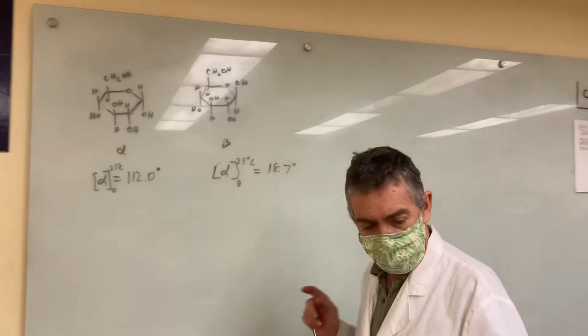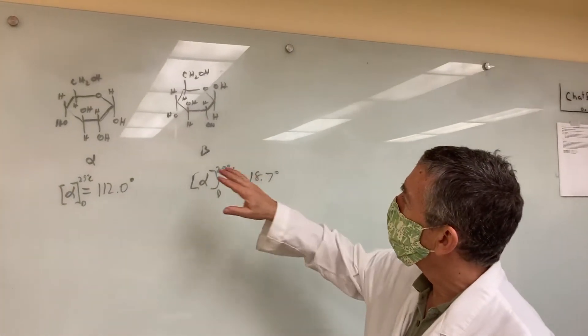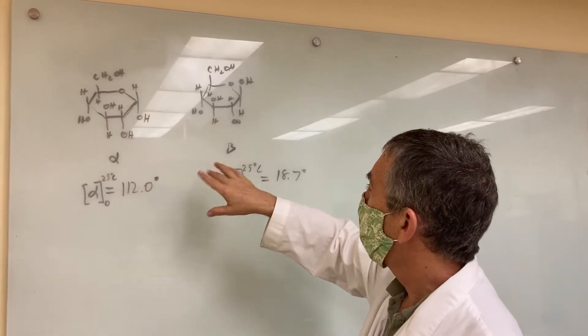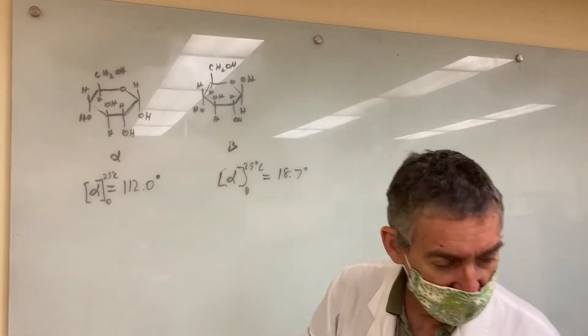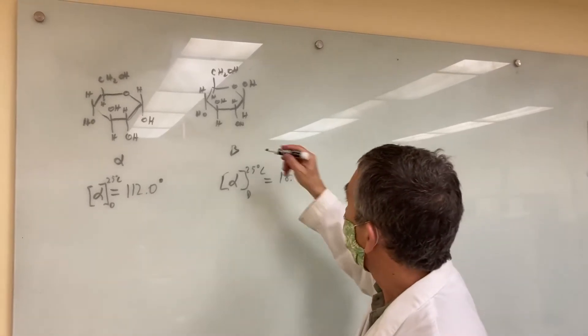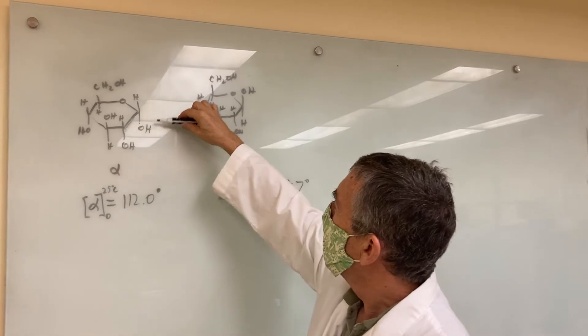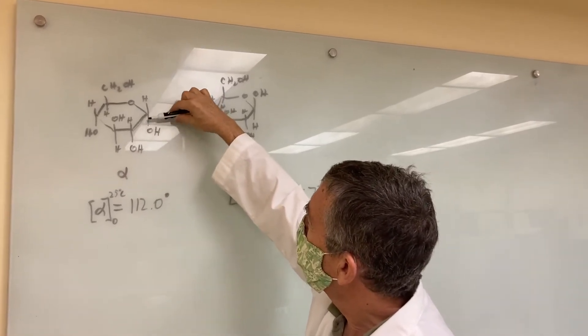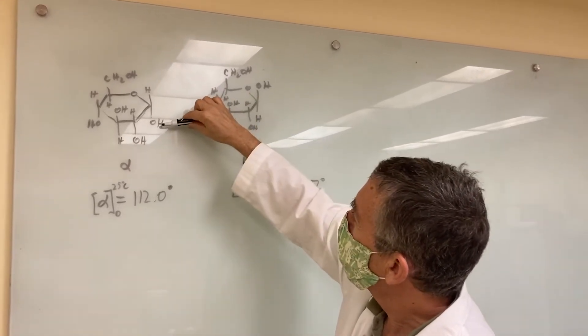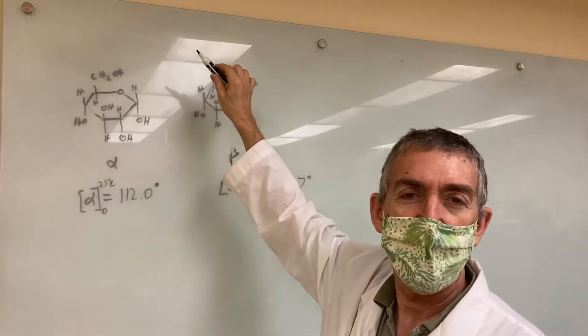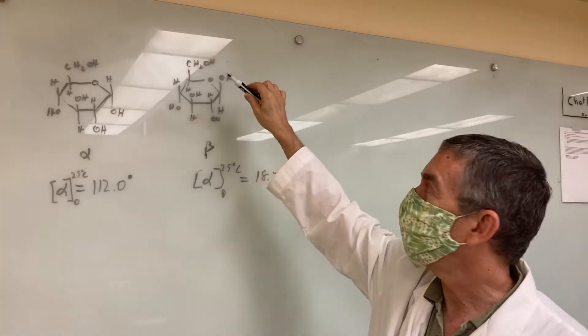So we have two forms of glucose. Well, here's glucose. But it's got two forms, alpha and beta. This is beta. And notice the one difference is right over here, where the OH is down for the alpha and up for the beta. And you've all learned about this in organic chemistry.